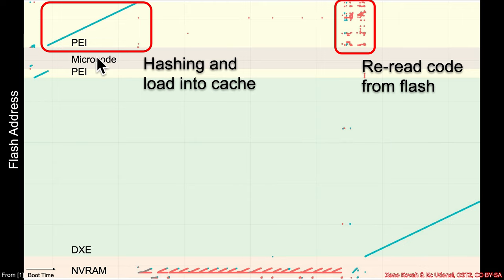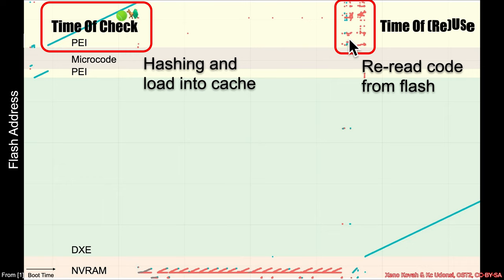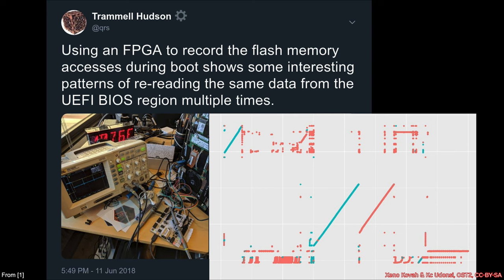In the context of secure booting and Intel BootGuard, this initial region is the time of check — reading in all of that PEI code to verify its integrity. That's fetch one, and it looks clean. But the subsequent re-accesses represent the potential time of reuse. With a double fetch, if there is time between them, an attacker could change out the contents between fetch one and fetch two. Different BIOSes show the same pattern: a big linear sweep — presumably integrity verification — followed by other big re-accesses.